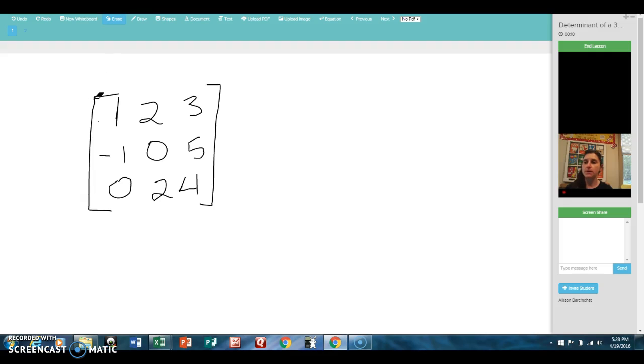So first, let me get rid of the matrix symbols and replace that with the bars that signify we're going to do a determinant, straight up and down lines. When we do an augmented matrix, we take the first two columns and write them over again after the matrix, like this.